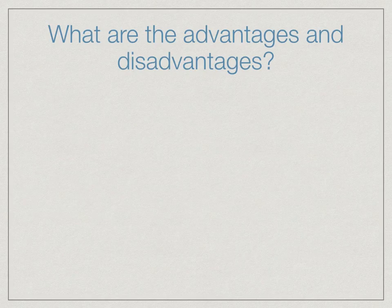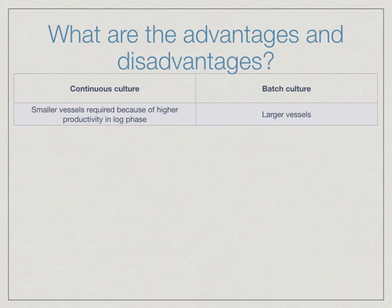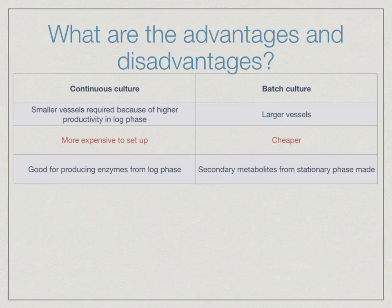Let's look at the advantages and disadvantages. Continuous culture involves smaller vessels because of the higher productivity in the log phase, whereas batch culture requires larger vessels. Continuous culture is more expensive to set up, whereas batch culture is cheaper. Continuous culture is good for producing enzymes in the log phase, while batch culture produces secondary metabolites in the stationary phase.